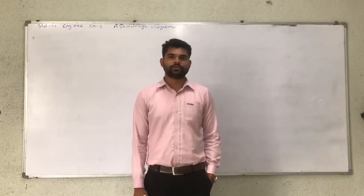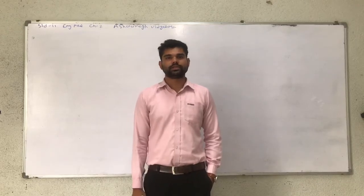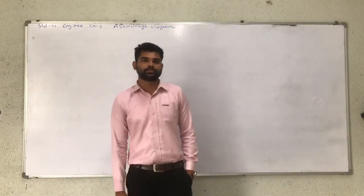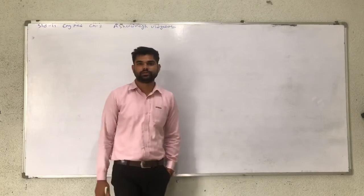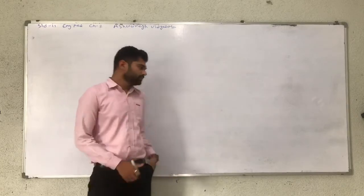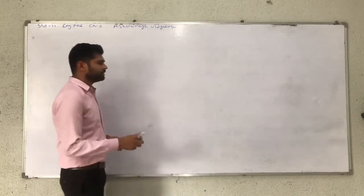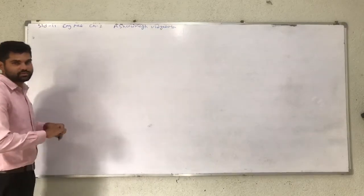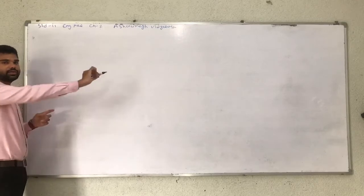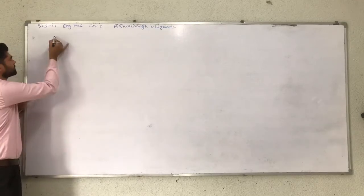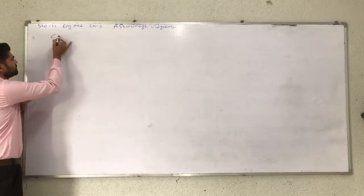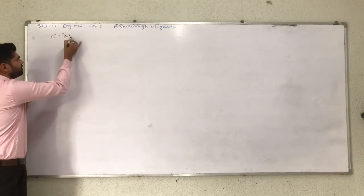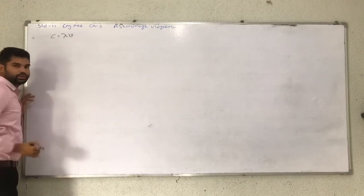Hello friends, myself Chodhan Tatar. Today we are in Standard. In the last lecture, we studied three variation quantities. First: C is equal to lambda into mu.